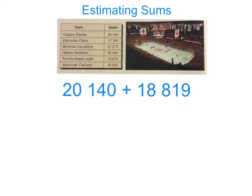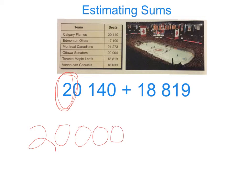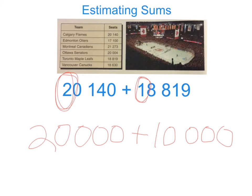Let's take a look at the first number: 20,140. The first digit is a 2, so we know that it is about 20,000. We can round that number down to 20,000. Now we look at the second number, 18,819. The first digit is a 1, so we know that that is about 10,000. We can round that number down to 10,000. Now we can add these two numbers together to get our total estimated sum of 30,000.